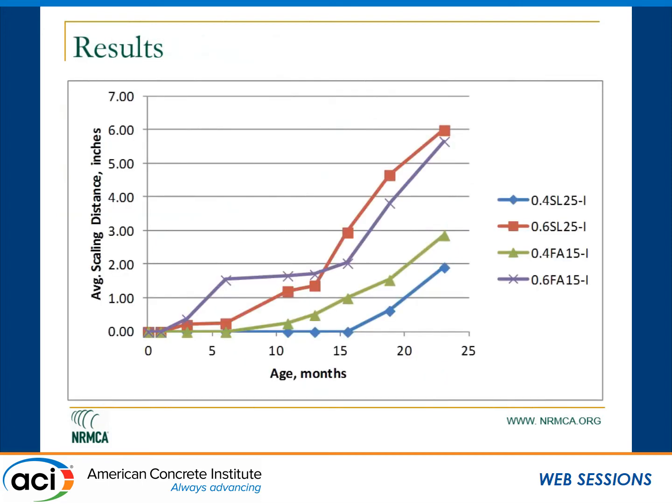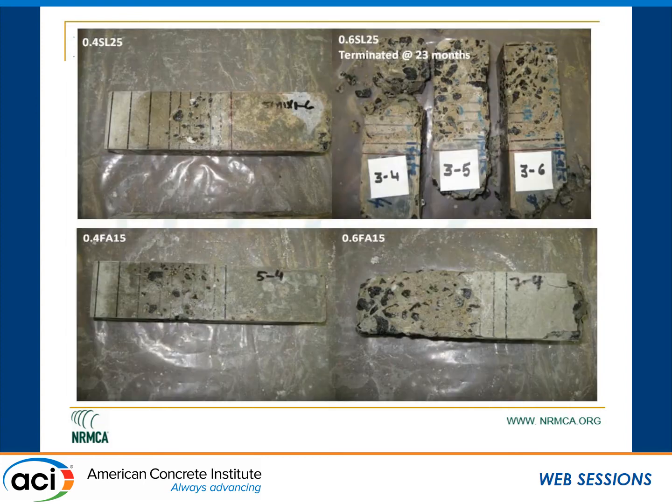Looking at the average scaling distance: for the first 12 months, you see very little failure. The 0.4 water-cement ratio with 15% Class F fly ash and the 0.4 with slag at 25% performed pretty well. The 0.6 fly ash mixes obviously had much quicker scaling. If you look at the pictures, the 0.4 mixtures clearly show only a very fine scaling starting from the solution interface, while the concrete up at the top looks very clean.